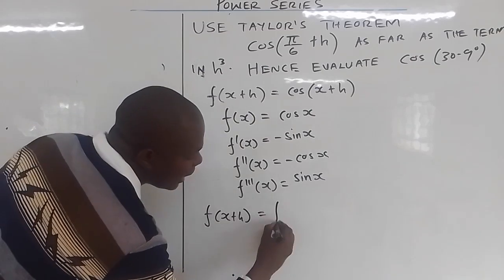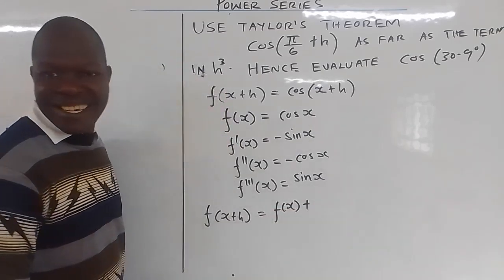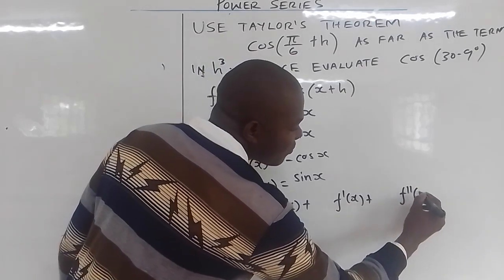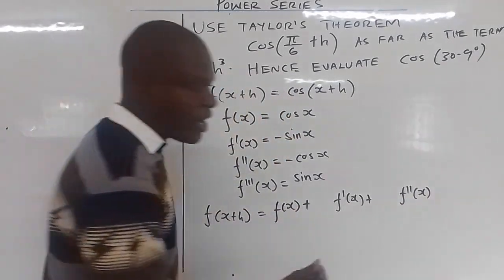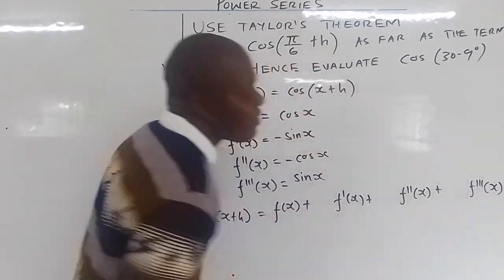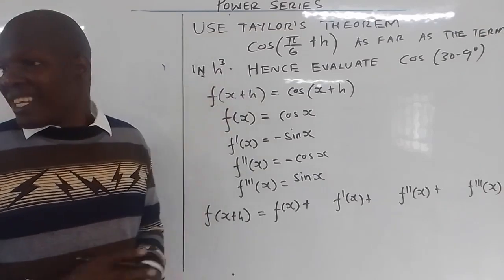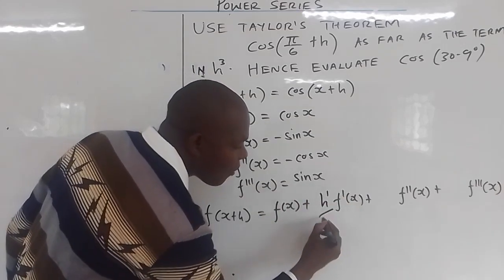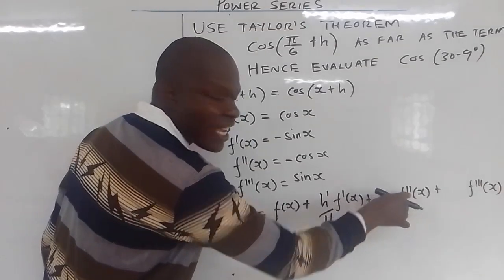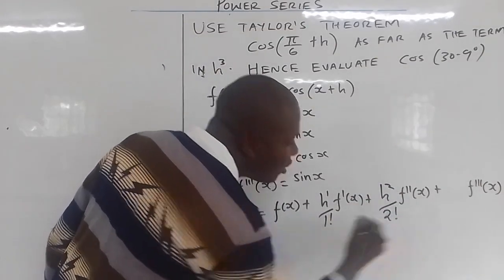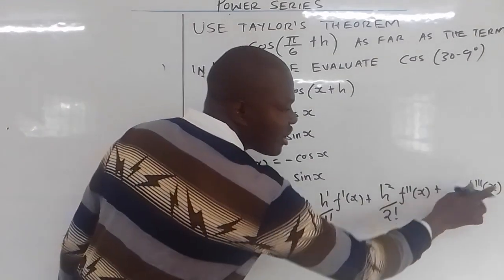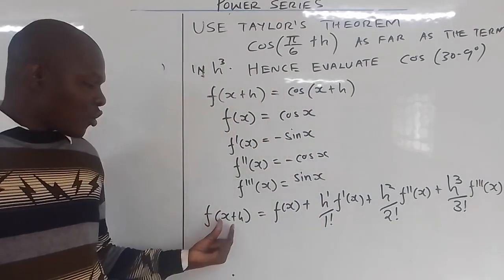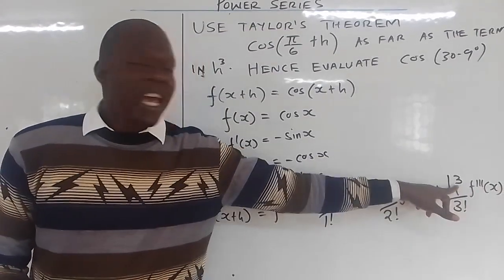The first term is f(x), then you add f'(x) with h to the power 1 over 1 factorial, then f''(x) with h squared over 2 factorial, then f'''(x) with h cubed over 3 factorial — because that is where we have the term in h cubed. You've now expanded f(x + h) up to h cubed.